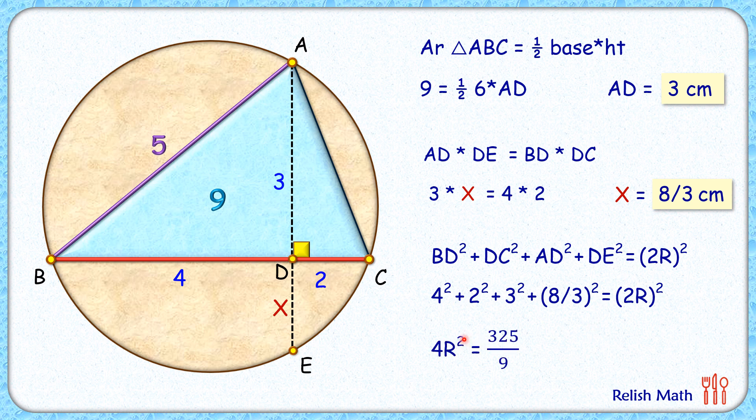r² will be 325/36, and r, taking the square root of it, we get the value of r as 5√13/6 centimeters, and that's our answer.